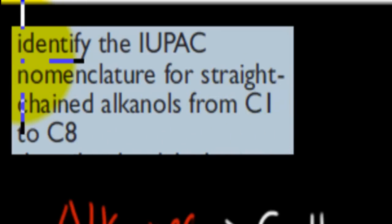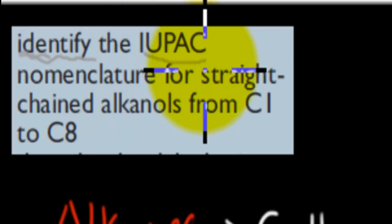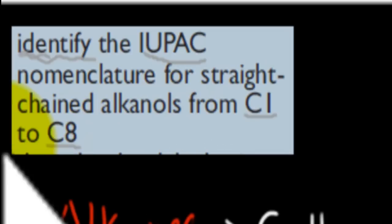So first we got to make sure that word identify means we just have to be able to know what the nomenclature is, state facts. We will talk about the IUPAC nomenclature and give the nomenclature for C1 to C8 of alkanols. So these are alcohols, these are not alkanes, these are alcohols.